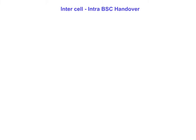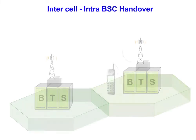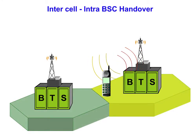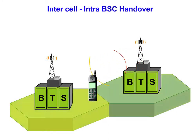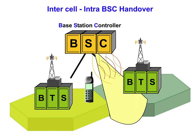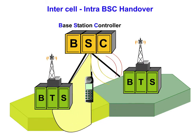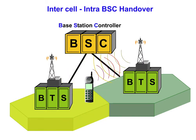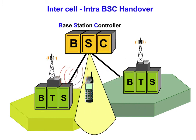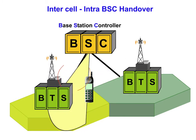The inter-cell intra-BSC handover takes place when a mobile user moves from one cell into a neighbouring cell, both controlled by the same BSC. The traffic connection to the old cell is discontinued as soon as the connection set up to the new cell is successfully completed. This process is controlled by the BSC.